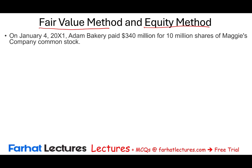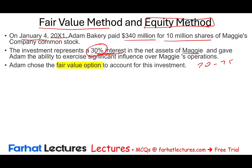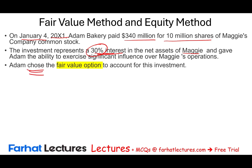On January 4th, X1, Adam paid $340 million for 10 million shares of Maggi's company stock. This investment represents a 30% interest in the net assets of Maggi and gave Adam the ability to exercise significant influence over Maggi's operations. A 30% interest means you can use the equity method since it exceeds the 20–25% threshold. However, Adam chose the fair value method, which is an available option. We'll look at the fair value approach first, then the equity method.